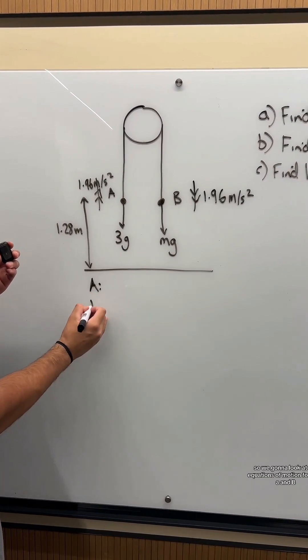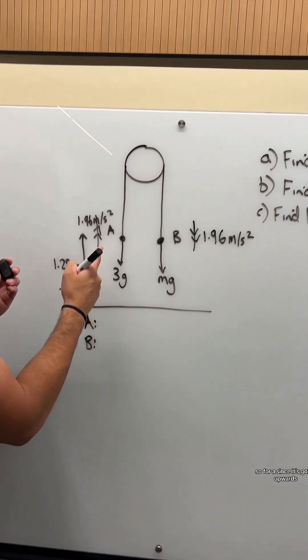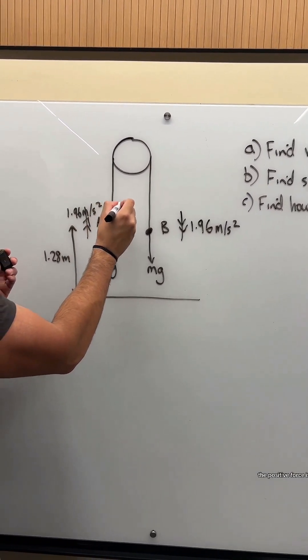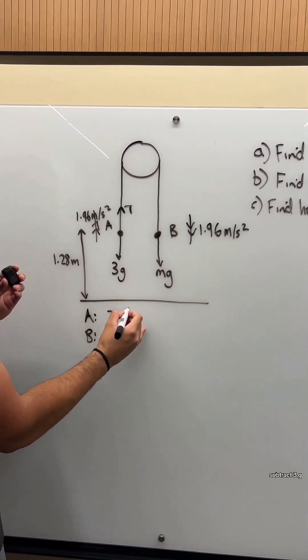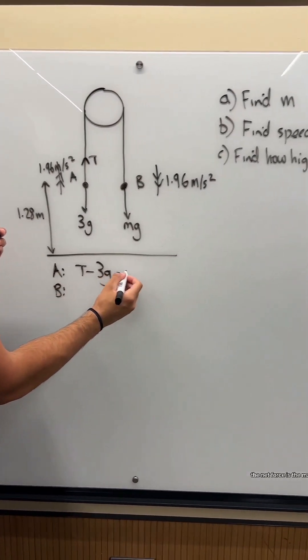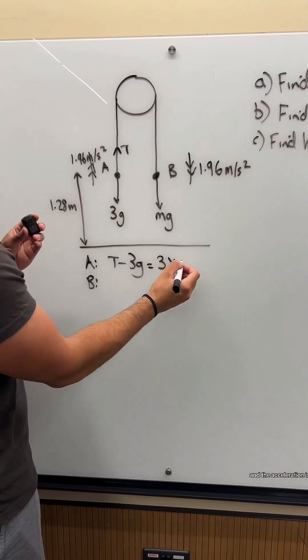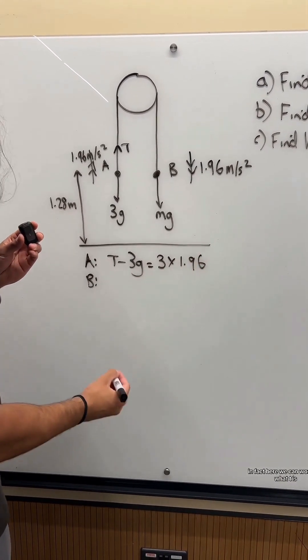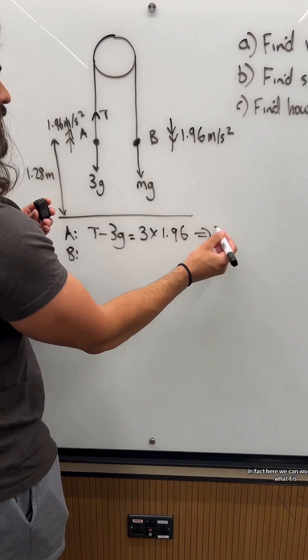We're going to look at the equations of motion for both A and B. For A, since it's going upwards, the positive force is T minus 3G. So F equals MA, the net force, is the mass 3 and the acceleration is 1.96. We can work out what T is.